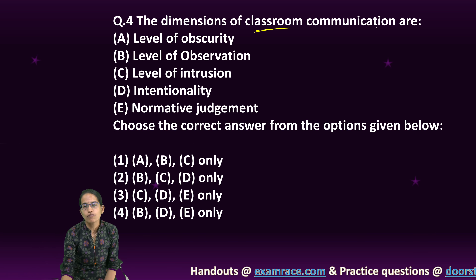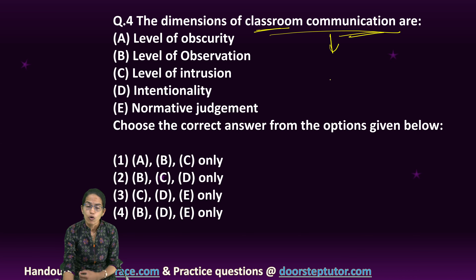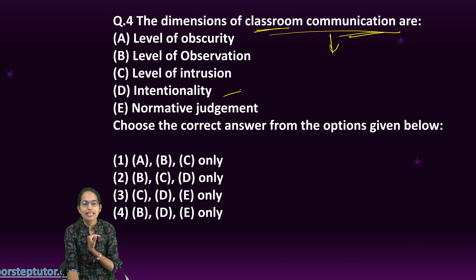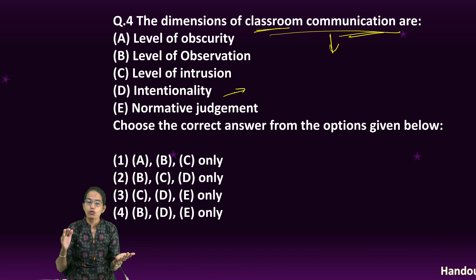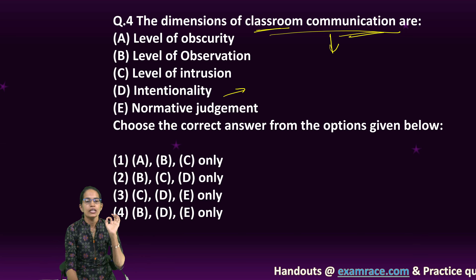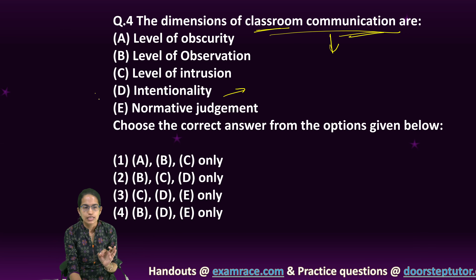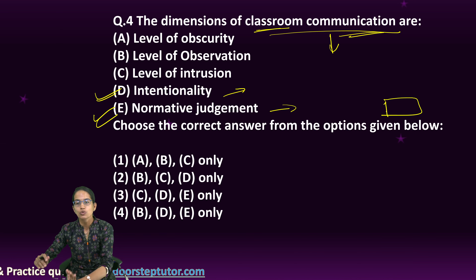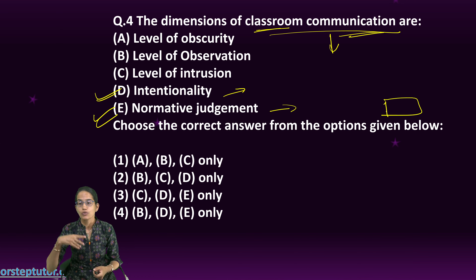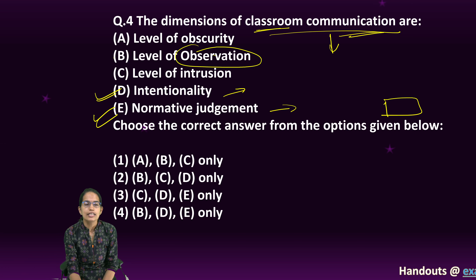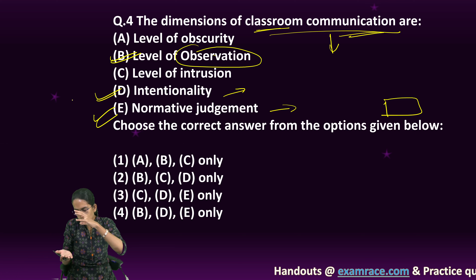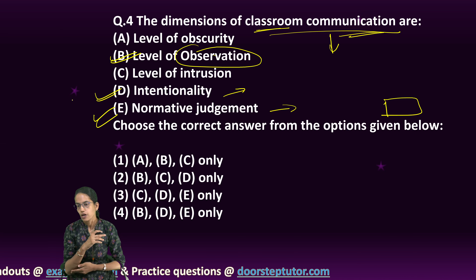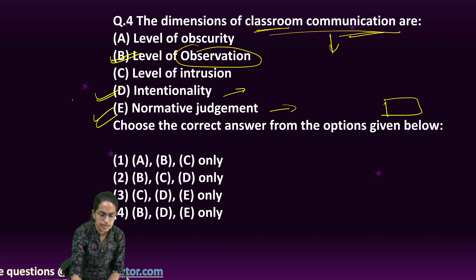The next question is about the dimensions of classroom communication. Classroom communication is intended for a particular purpose — for example, talking about communication to students preparing for the NET examination. So intentionality is important. It should also be normative, meaning the aim is to guide the student. The next dimension is the level of observation — understanding things in depth and monitoring issues closely so they can be modified if needed. So B, D, and E are the correct options.